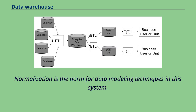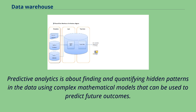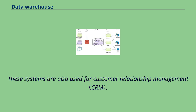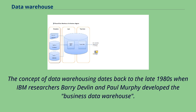Normalization is the norm for data modeling techniques in OLTP systems. Predictive analytics is about finding and quantifying hidden patterns in the data using complex mathematical models that can be used to predict future outcomes. Predictive analysis is different from OLAP in that OLAP focuses on historical data analysis and is reactive in nature, while predictive analysis focuses on the future. These systems are also used for customer relationship management.